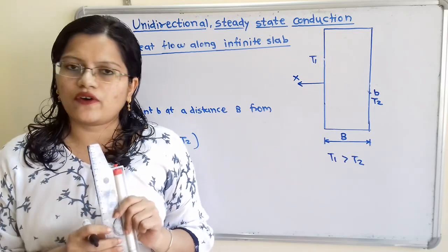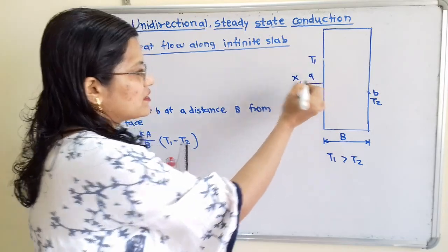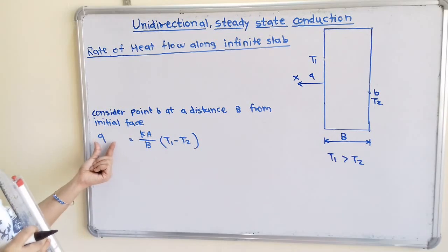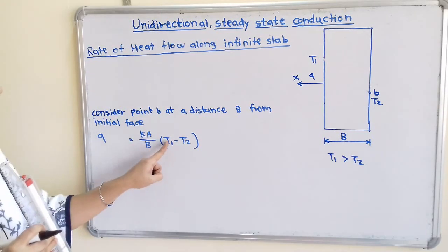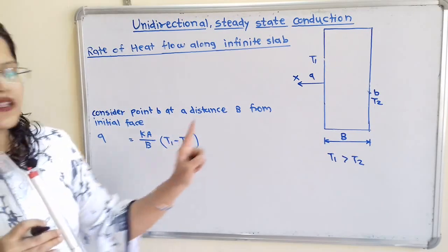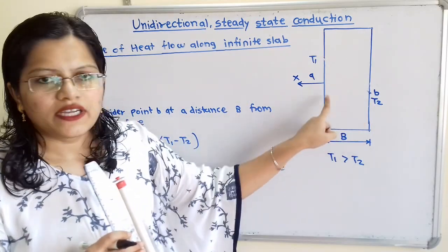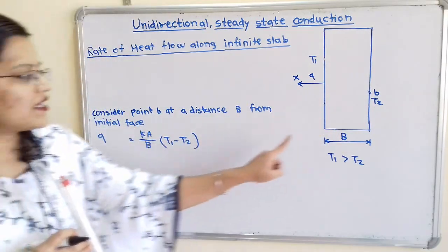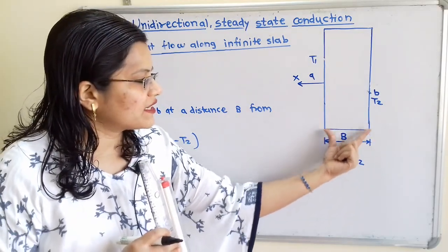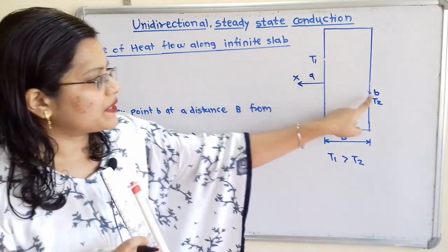The rate of heat flow Q is given by the formula: Q equals K times A divided by B, multiplied by T1 minus T2. Here K is the thermal conductivity of the material, A is the area normal to heat transfer, B is the thickness of the slab, and T1 minus T2 is the temperature difference.